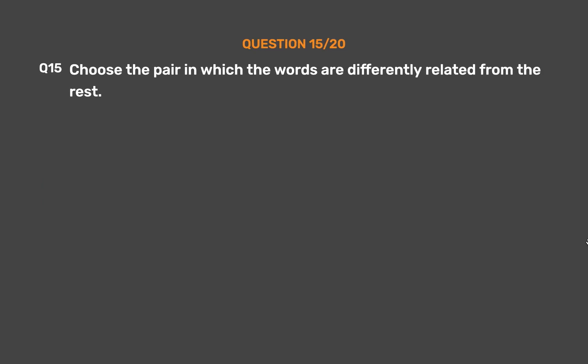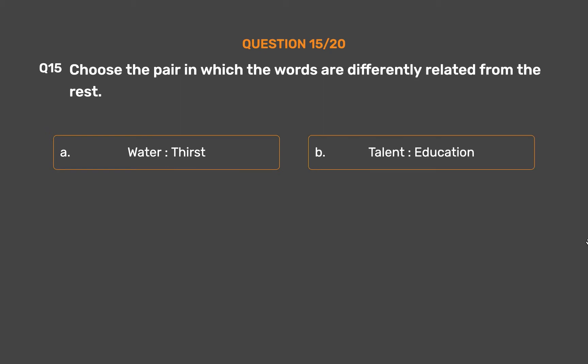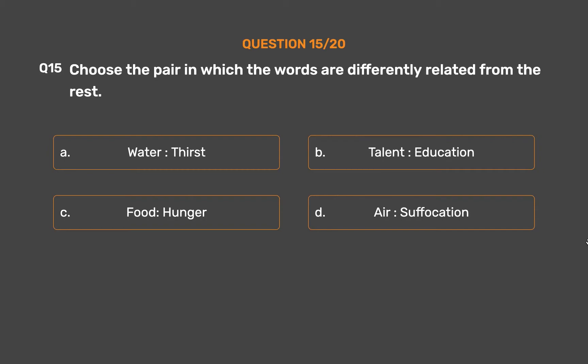Question number 15. Choose the pair in which the words are differently related from the rest. Option A: Water, Thirst. Option B: Talent, Education. Option C: Food, Hunger. Option D: Air, Suffocation.